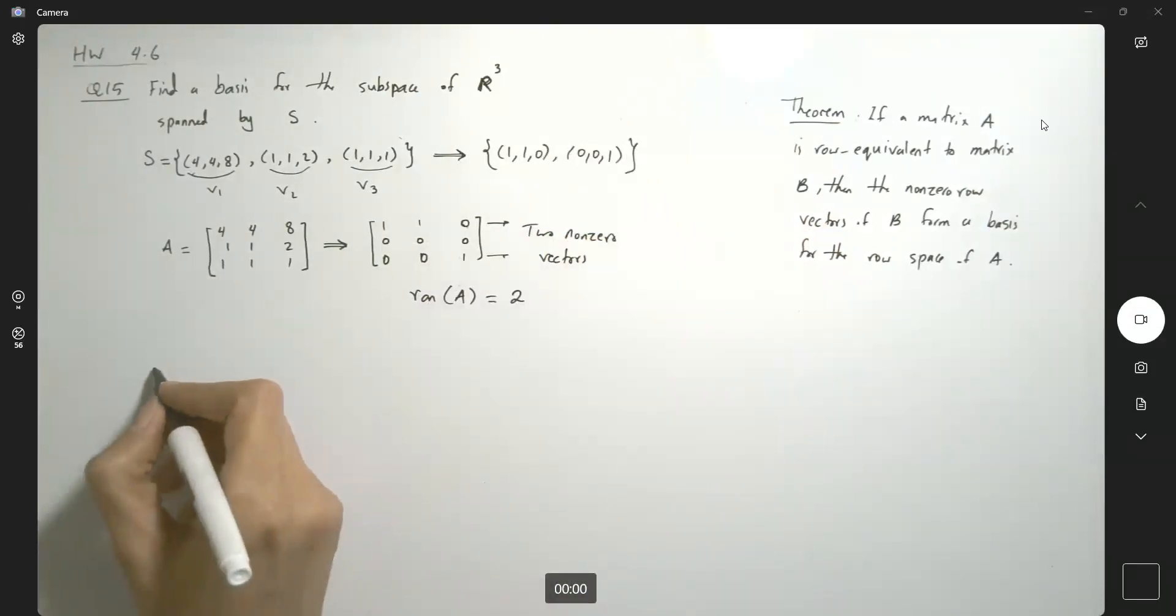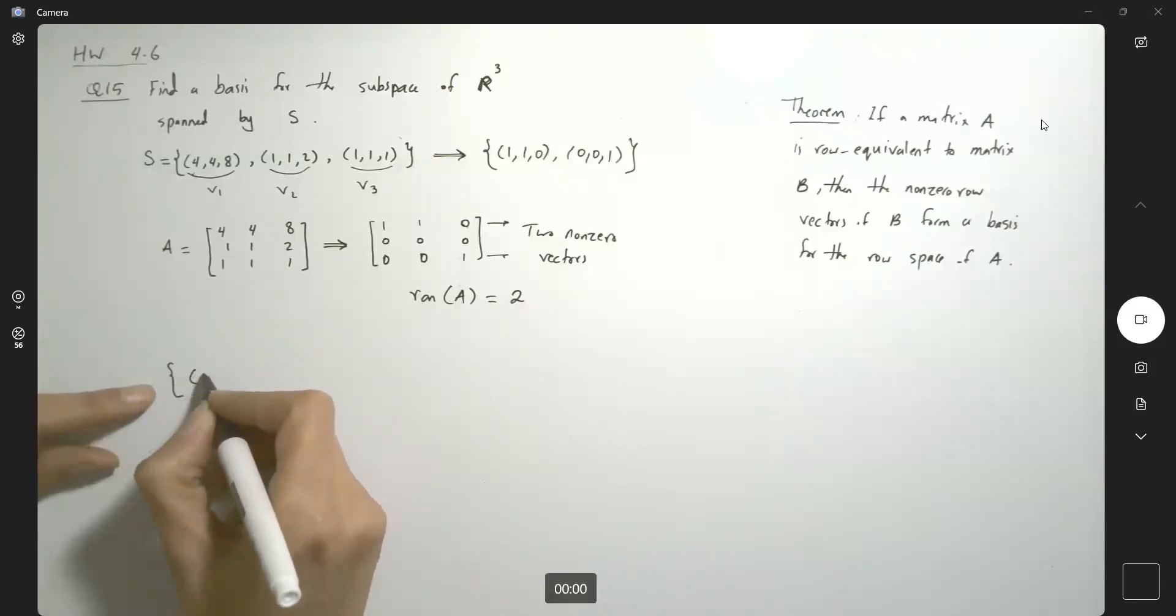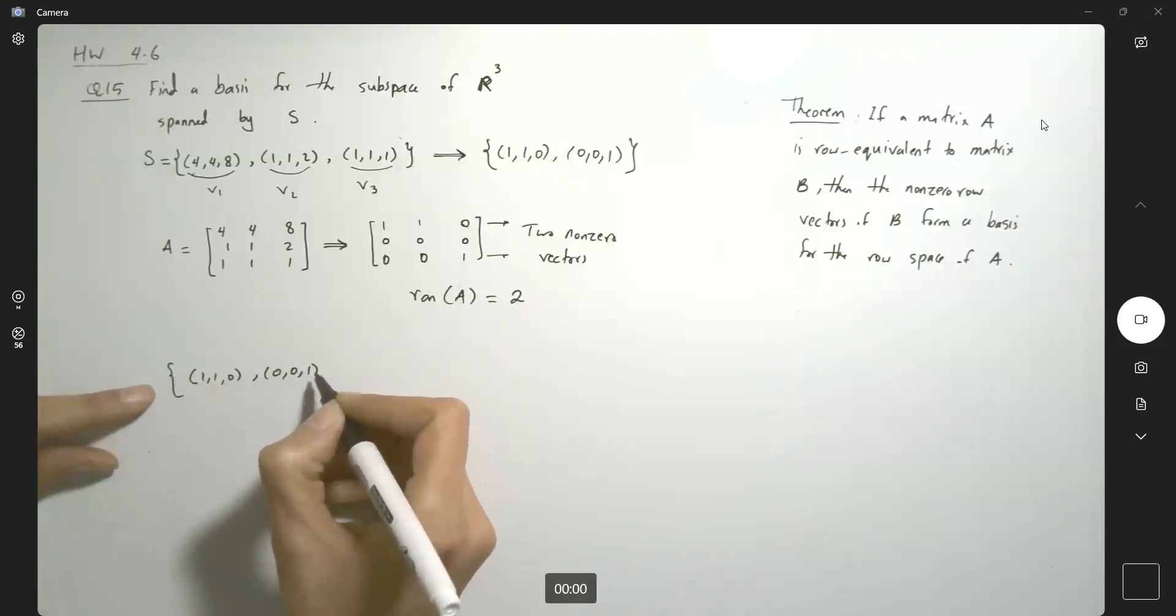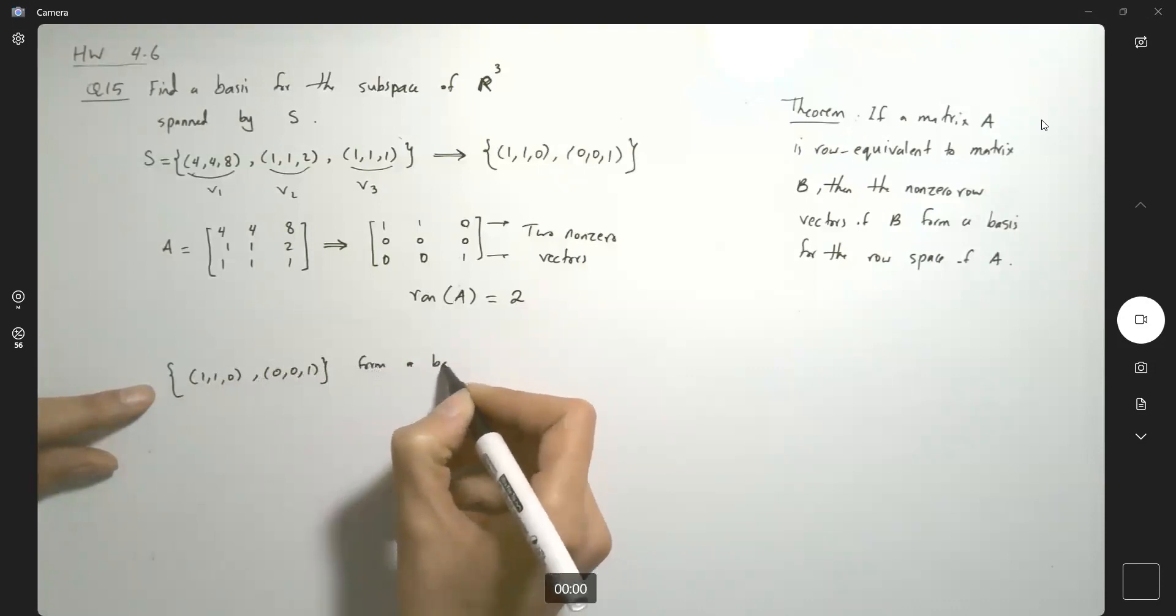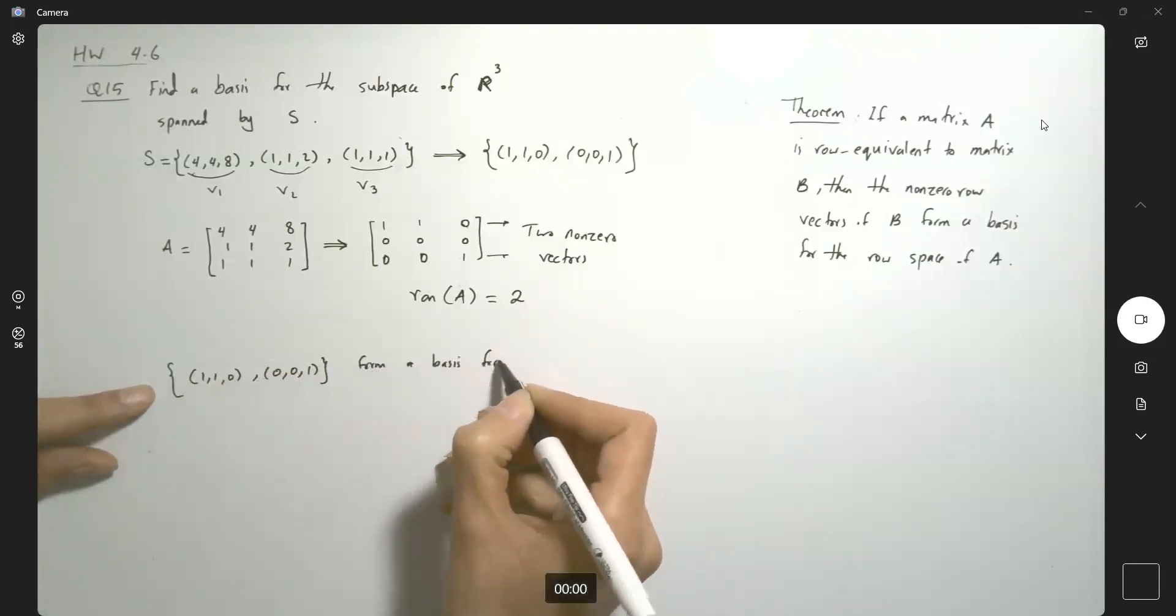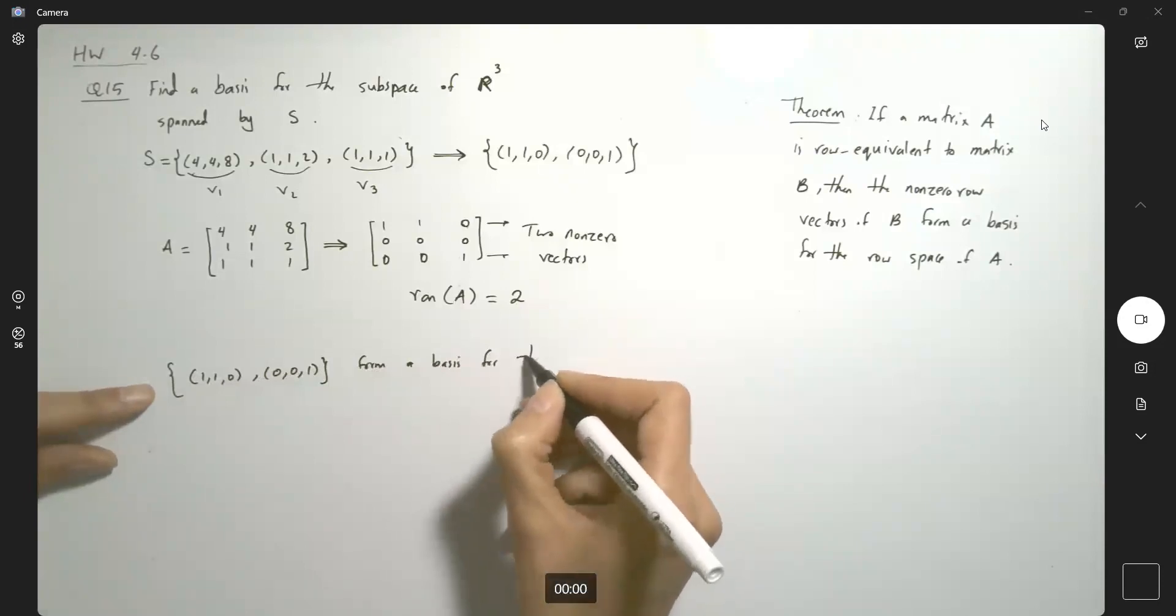So basically write it this way. The set including (1, 1, 0) and (0, 0, 1) form a basis for the row space.